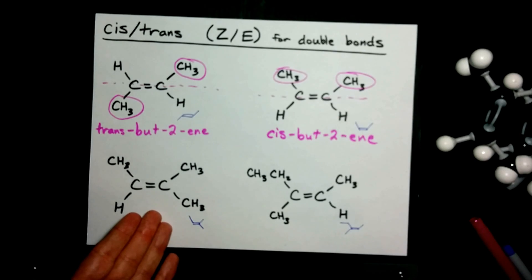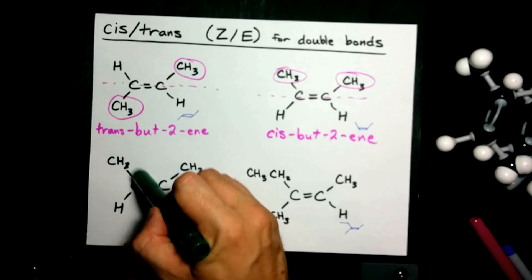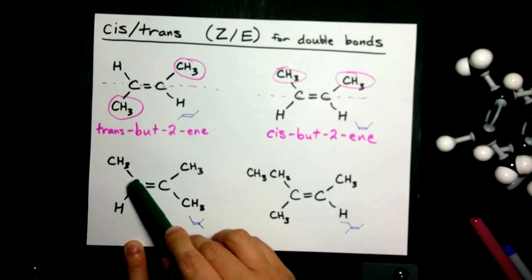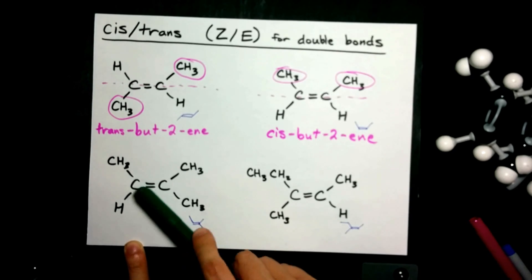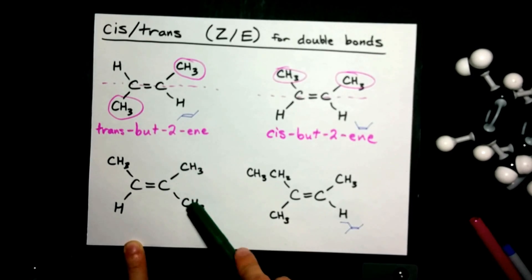Take a look at this molecule. On this side, or attached to this carbon, we have an H and a CH3. On this carbon, we have two CH3 groups.